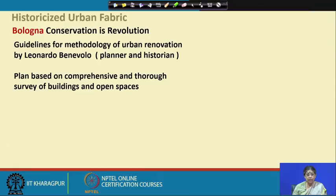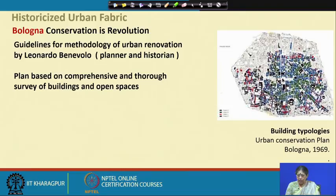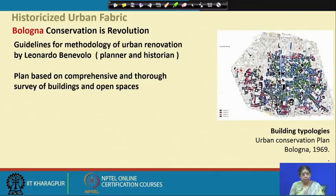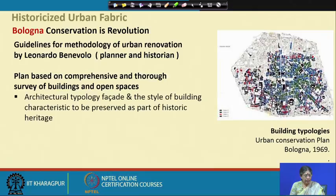This is one of the maps prepared showing building typologies from the 19th century. The different types of buildings — courtyard type or apartment type — were categorized and demarcated on the plan. Various thematic plans were prepared based on thorough survey and documentation. Architecture typology, facade, and the style of building characteristics to be preserved were identified as part of the historic areas.